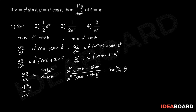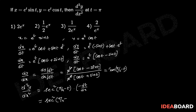d²y/dx² equals the derivative of tan(π/4 minus t) with respect to x. Using the chain rule, this equals sec²(π/4 minus t) times (minus 1) times dt/dx, which is 1 divided by [e power t times (cos t plus sin t)].